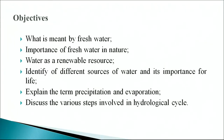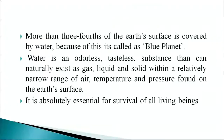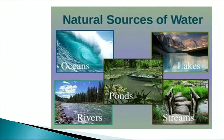We will also discuss the terms precipitation and evaporation, and the various steps involved in the hydrological cycle. More than three-fourths of the Earth's surface is covered by water, which is why the planet is called the blue planet. Water is an odorless, tasteless substance that can naturally exist as gas, liquid, and solid within a relatively narrow range of air temperature and pressure found on the Earth's surface. It is absolutely essential for the survival of all living beings. We can see different water bodies such as oceans, rivers, ponds, lakes, and streams.